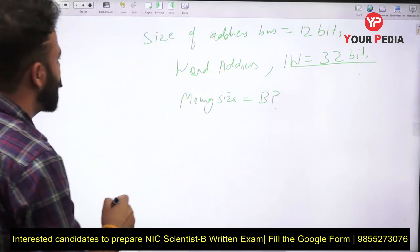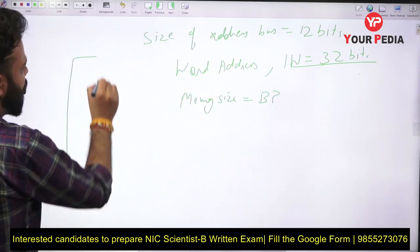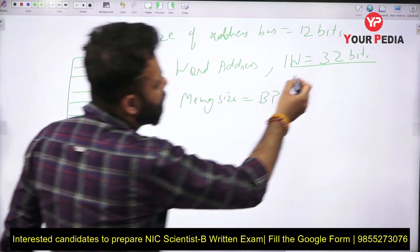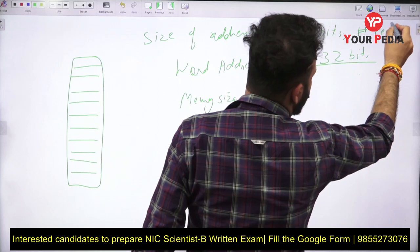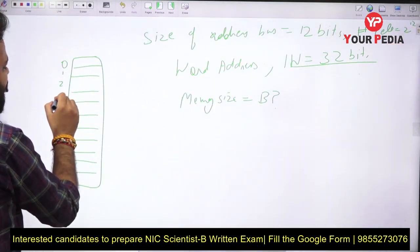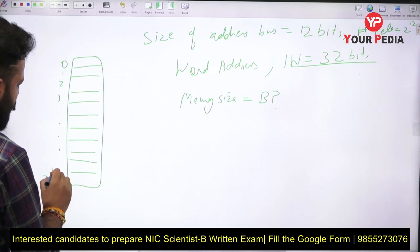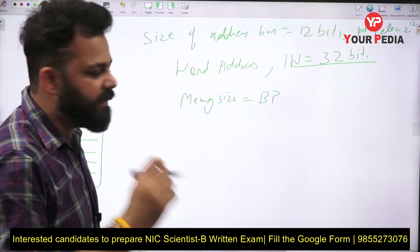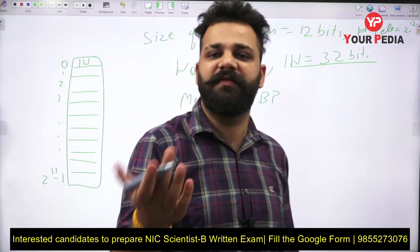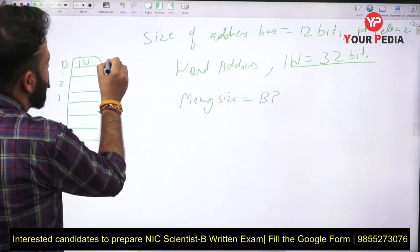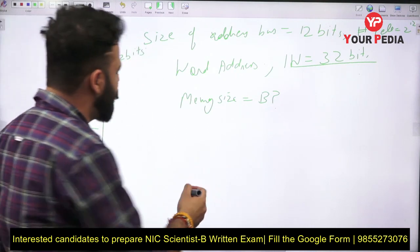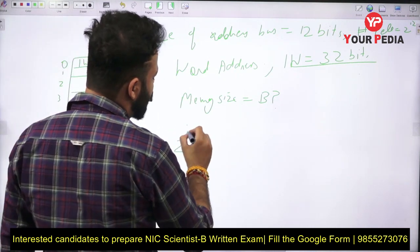If 12 bits are required, the number of cells will be 2 raised to power 12. So there are 2¹² cells in this memory. Each cell stores one word, and the size of each cell is one word which equals 32 bits. So cell size is equal to 32 bits.